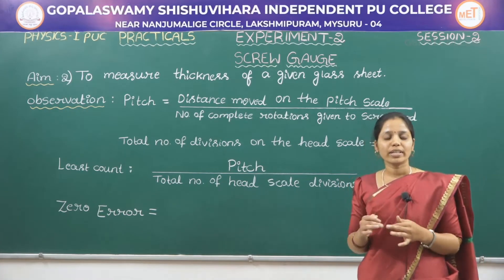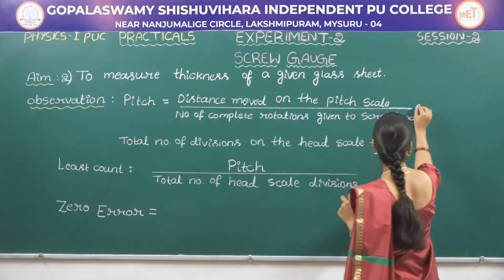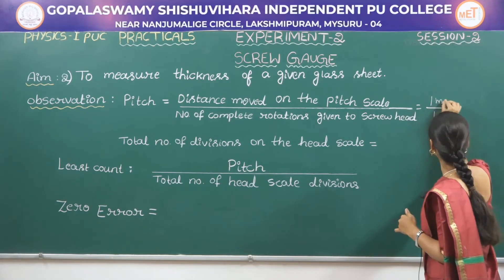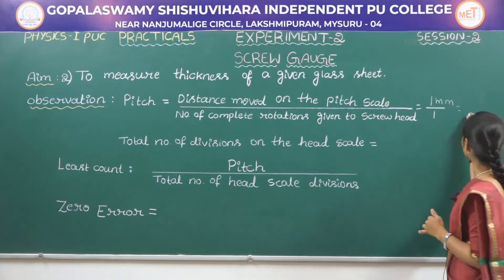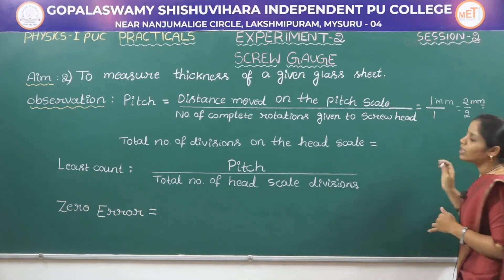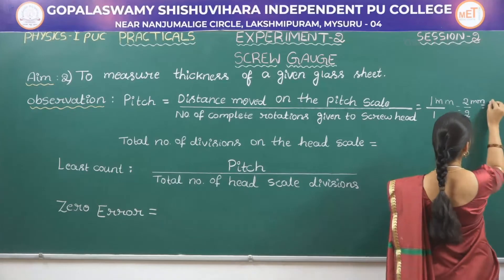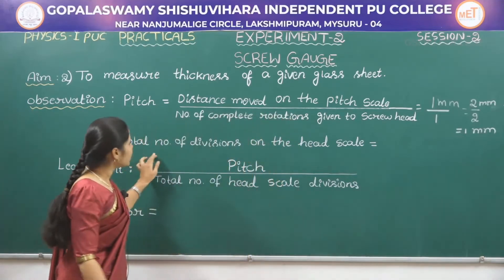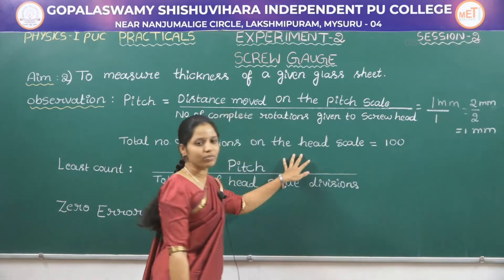In the last class I showed that if I give one rotation to the screw head, the distance moved on the pitch scale is 1 millimeter. If I give two rotations, the distance moved is 2 millimeters, and for three rotations it is 3 millimeters. So the value of pitch is 1 millimeter. The total number of divisions on the head scale is 100.